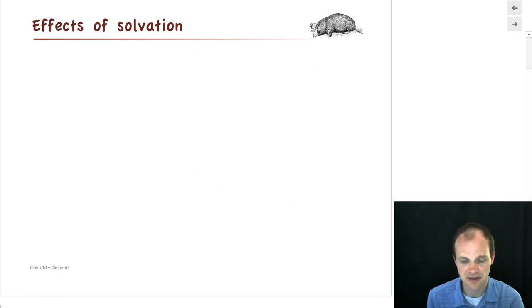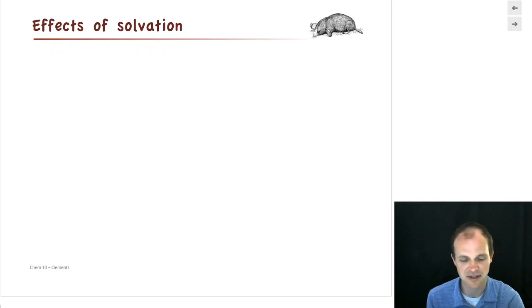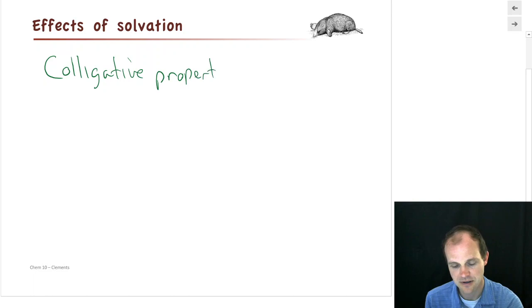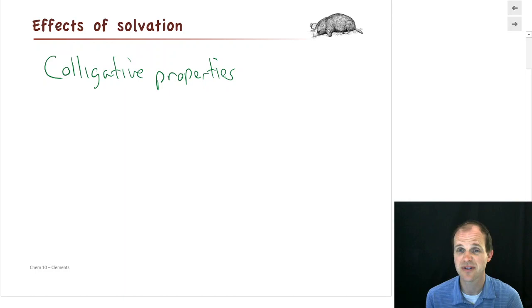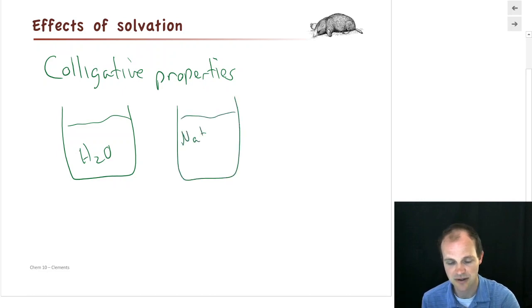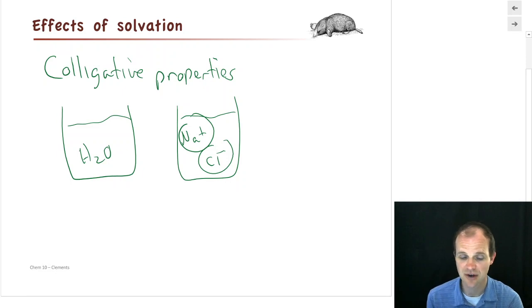Our last topic is effects of solvation, or another word people use: colligative properties. What happens to the properties of water when you dissolve something else in it? Does pure water have the same properties as water with sodium chloride dissolved in it? The answer is no — there are several properties about the water that change.